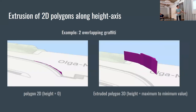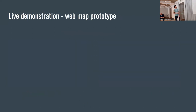Here you can see how this extrusion works. First I have the shape in 2D — the polygon — with height at zero. Then through extruding it, I get these 3D shapes.